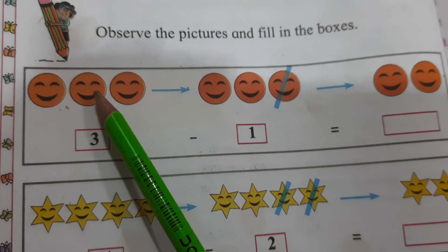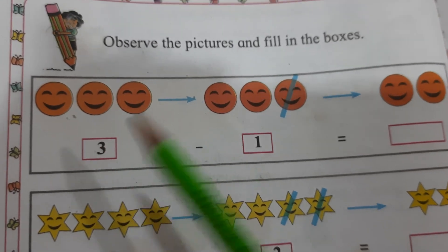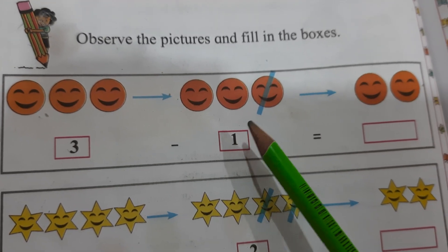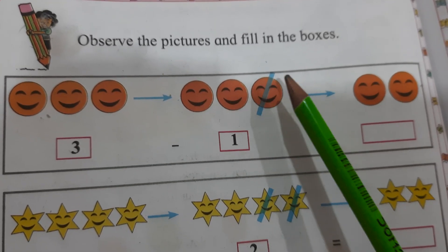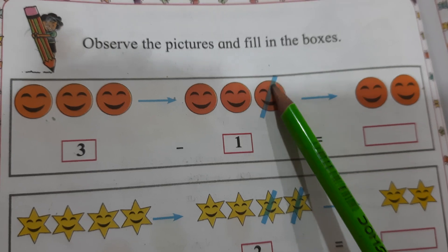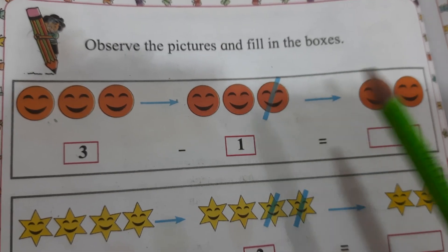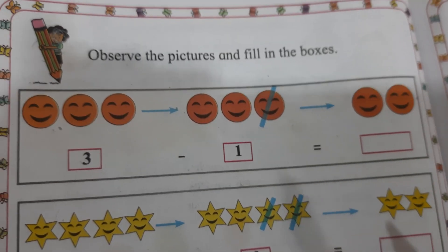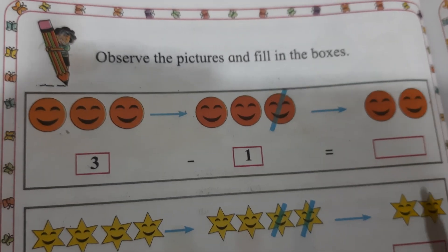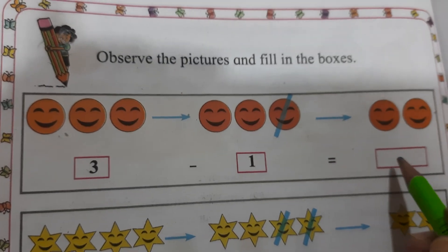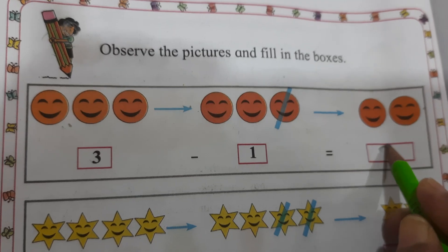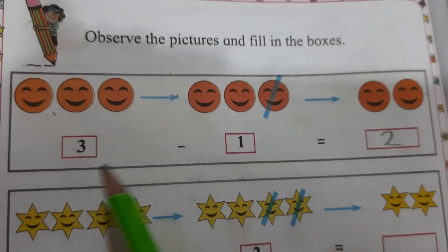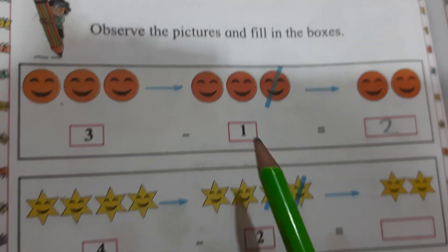3, 1, 2, 3. 3 minus 1. 1 cut is equal to 2. Answer is 2. 3 minus 1.